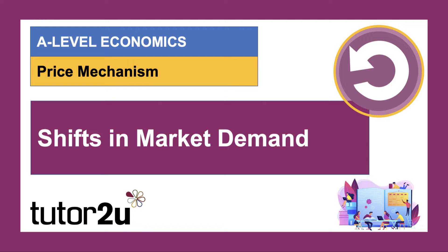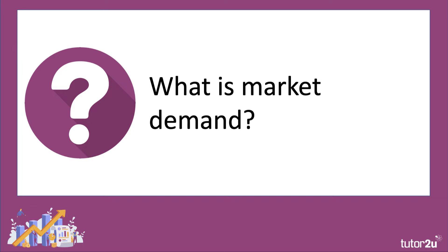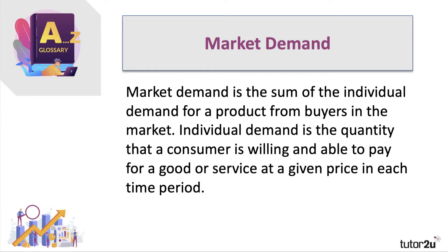Welcome to another micro video. What are the key factors that can cause a change in market demand for different goods and services? Market demand is the sum of individual demand for a product from buyers in the market. Individual demand is defined as the quantity of a good or service that the consumer is willing and able to pay — two crucial points: willingness to pay and ability to pay.